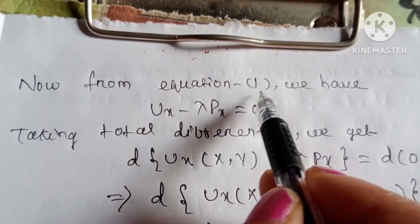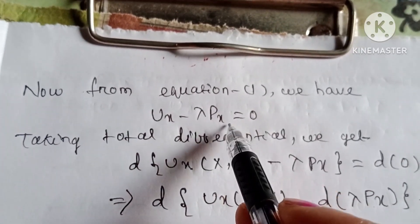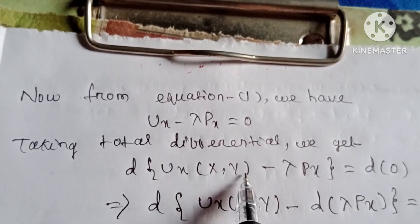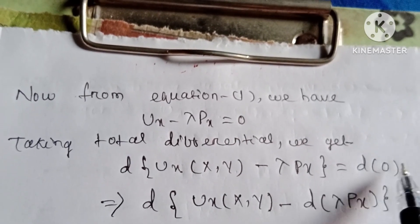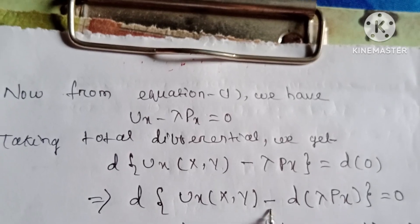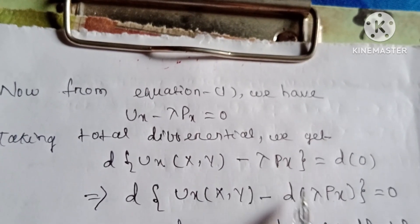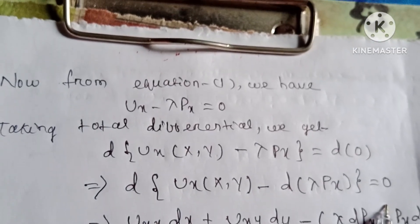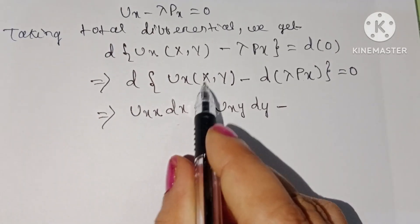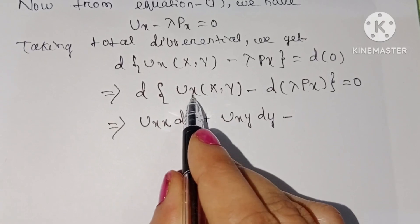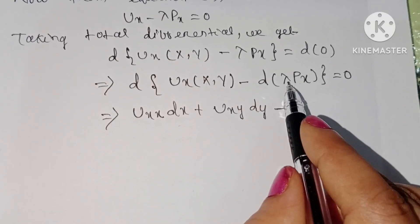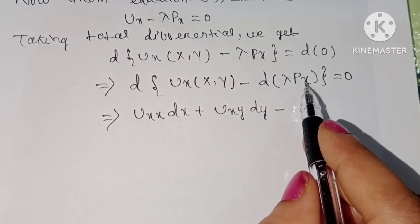From equation one, we have u_x minus λ·px equal to zero. Taking the total differential we get d(u_x) minus d(λ·px) equal to zero. This gives u_xx·dx plus u_xy·dy, and then we apply the product rule to the term λ·px because both λ and px are variables.